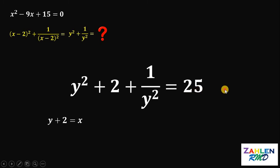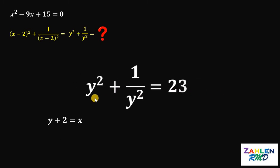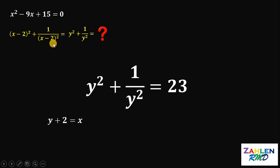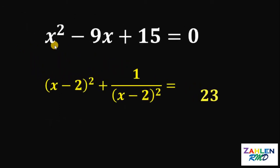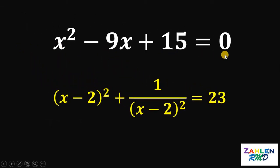Now subtract 2 on both sides and we get that y squared plus 1 over y squared equals 23. We also know that this is equivalent to x minus 2 quantity squared plus 1 over x minus 2 quantity squared. Therefore, if x squared minus 9x plus 15 equals 0, then x minus 2 quantity squared plus 1 over x minus 2 quantity squared is equal to 23. And as always, we are done.